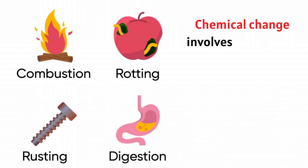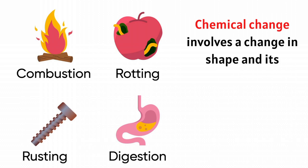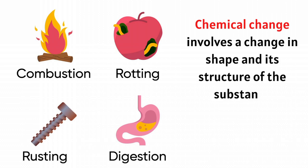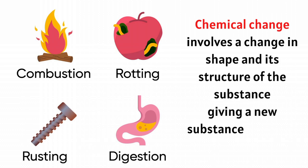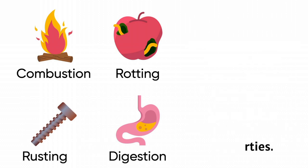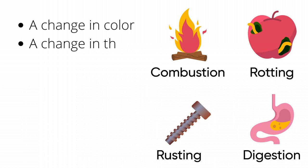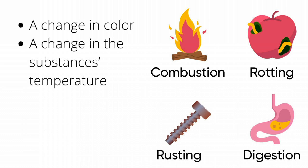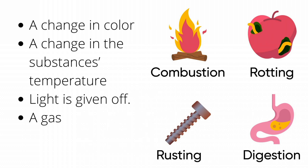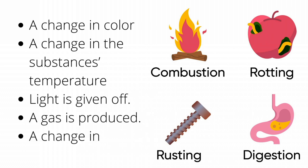A chemical change involves a change in the composition and structure of the substance, giving a new substance with new properties. Possible signs that a chemical change has occurred include: a change in color, a change in the substance's temperature, light is given off, a gas is produced, and a change in taste.